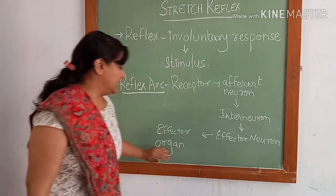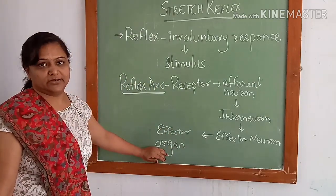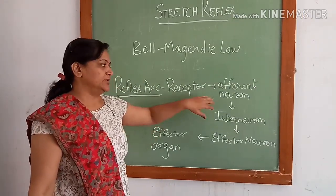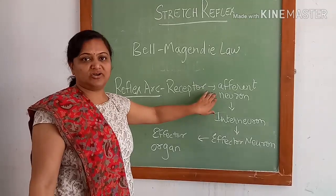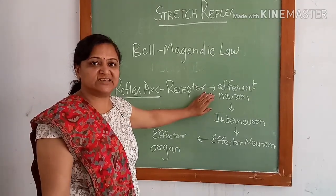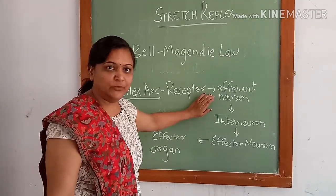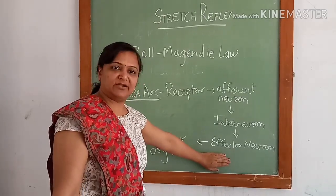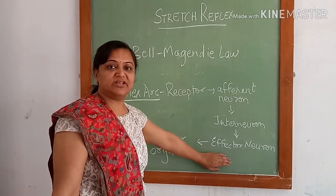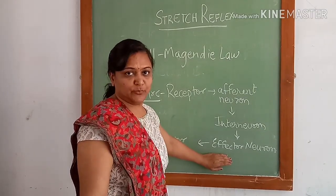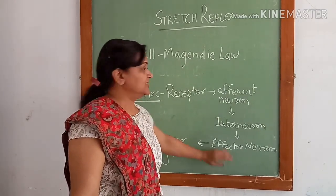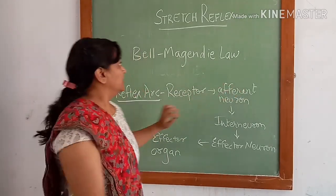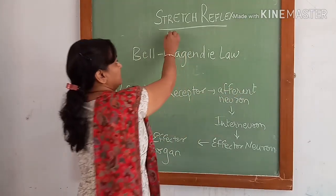In the spinal segment, the dorsal horn contains the afferent neurons, which are sensory inputs, and the ventral horn contains the effector neurons, which are motor outputs. This is known as the Bell-Magendie law.